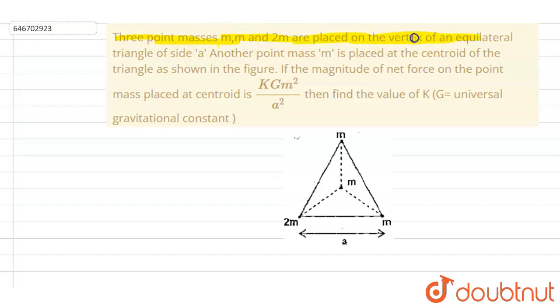m, and 2m are placed on the vertices of an equilateral triangle of side a. Another point mass m is placed at the centroid of the triangle as shown in the figure. If the magnitude of net force on the particle placed at the centroid is kGm²/a², then you have to find out the value of k.